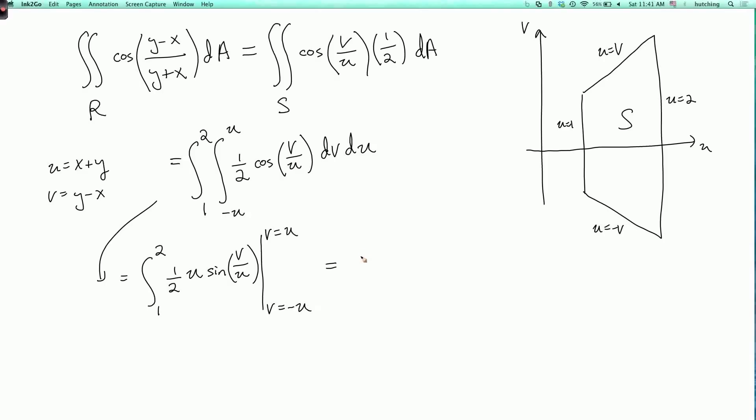So this is the integral from 1 to 2, and also there's a du here at the end. So it's a half of what? So when v equals u, this is sine of 1. So this is u times sine of 1, and then minus, so when v equals minus u, v over u is minus 1, so I have minus u times sine of minus 1 du.